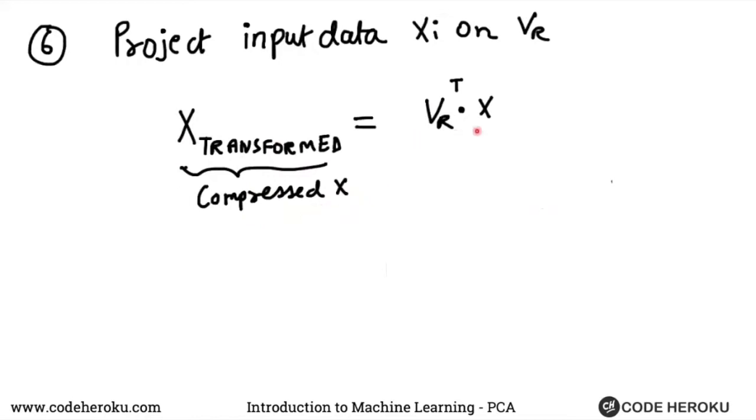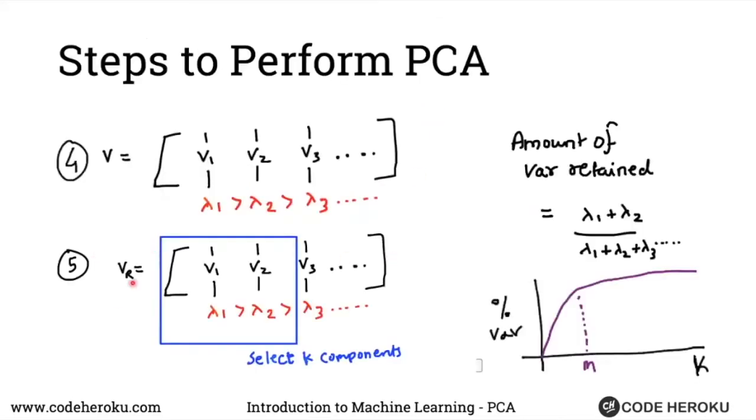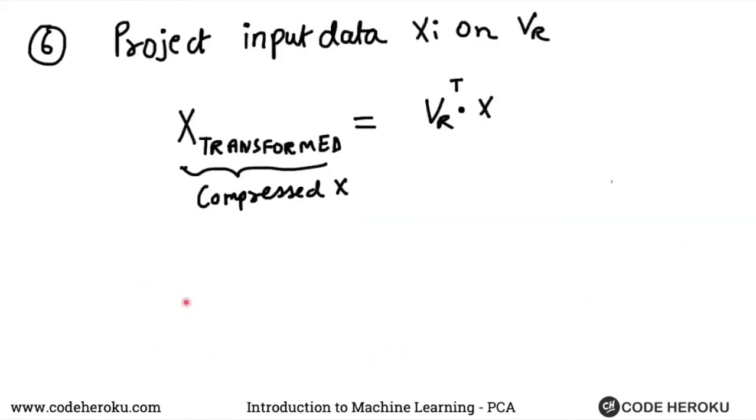Such that we take this vr, this reduced vector subspace that we got over here. This is the vr and we just transpose it and now apply to x. This is nothing but projection of this points onto vector vr.